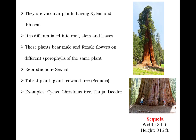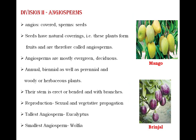Now the second division — Angiosperms. The word is divided into 'angios' meaning covered and 'sperms' meaning seeds. Angiosperms are plants with covered seeds — the seeds are covered with the help of a fruit wall. Plants with covered seeds are called Angiosperms. These seeds have natural covering, and these plants bear fruits — because of these two reasons they are called Angiospermic plants.